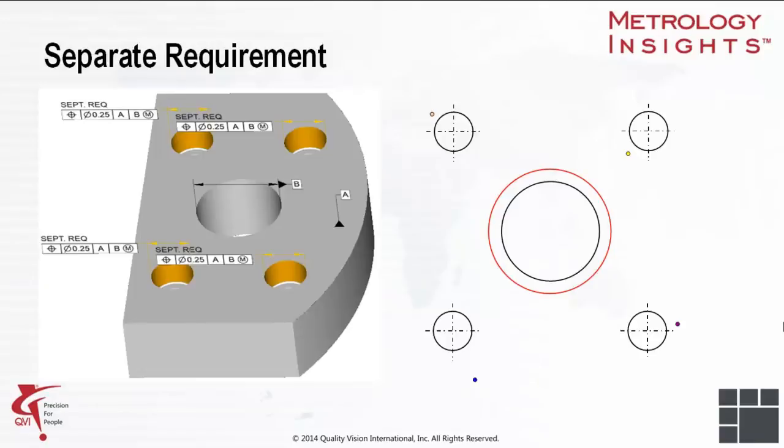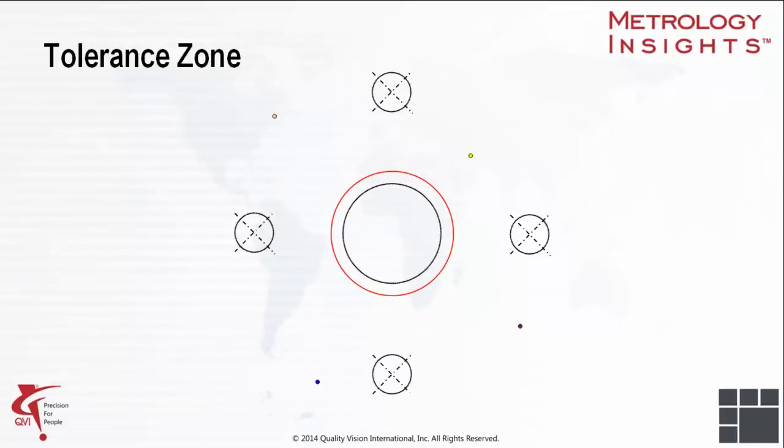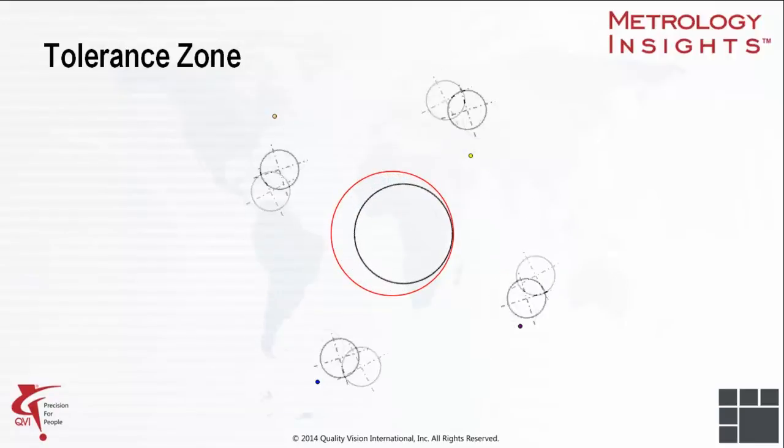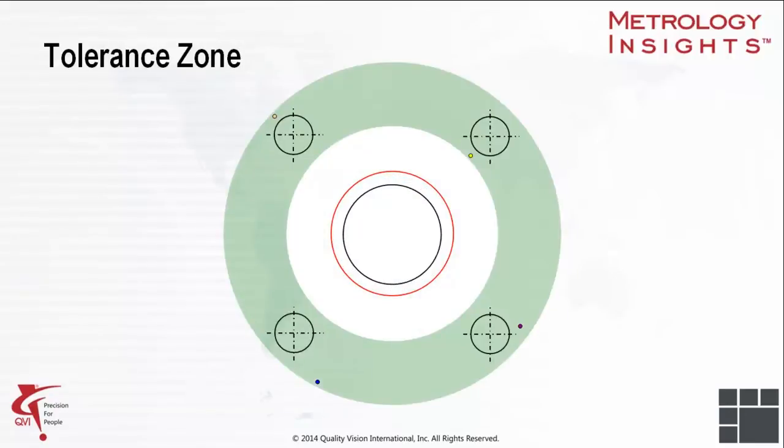Now, let us consider the separate requirements case. The model is the same except for the notation separate requirements above the feature control frame. This time, the different points are colored differently to remind us that they need to fulfill the FCF requirements separately. Since the datum reference frame has no alignment constraint, each of the axis tolerance zones is allowed to translate and to rotate around datum B, in order to minimize the deviations of any of the axes. When the datum feature simulator touches datum feature B, we can see the closest and the farthest away the gauge can get from the part. This determines the boundaries of the tolerance zones.